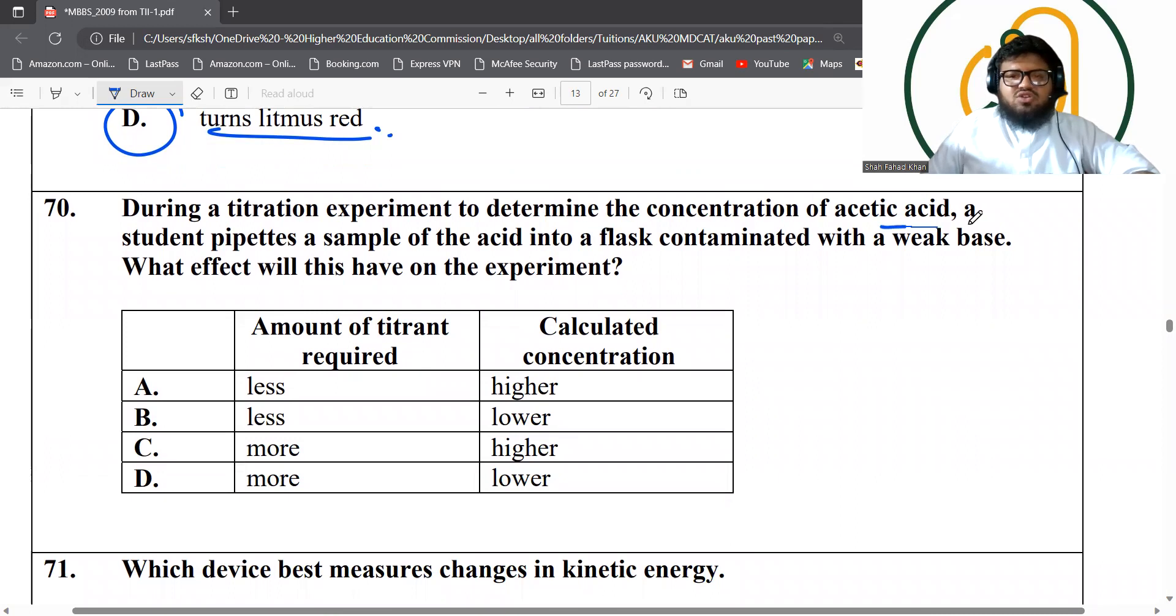During the titration experiment to determine the concentration of acetic acid, a student pipettes a sample of the acid into a flask that already had some base. So you will be actually adding in acetic acid, hoping that it's going to neutralize it. But then if you have some more base already sitting in there, you'll need more than the actual concentration of acetic acid. So this will have results. Amount of titrant required will also be higher, and the calculated concentration will also be higher.